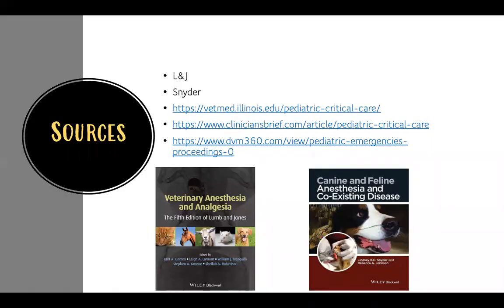In terms of sources, Lemon Jones fifth edition 2015 is a big one. The Snyder Anesthesia and Coexisting Disease book is really, really helpful — they're coming out with another version within the next year or so, and I would highly recommend it for looking up coexisting diseases. There are also a couple of articles from Clinician's Brief, DVM360, and the University of Illinois that have good resources on pediatric and neonatal anesthesia.